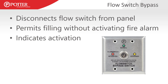There are options to avoid that. Potter offers a flow switch bypass switch that connects in line between the flow switch and the fire alarm panel, simply disconnecting that signal as it's being sent. It permits filling and maintenance without activating the fire alarm, but also gives you an indication through an LED light that it is activated. When the bypass switch is in the bypass position, the fire alarm panel goes into trouble — so it can't be forgotten about. The red LED illuminates to tell you when the paddle is in the flow position, giving you a way to test the switch without activating the fire alarm system during maintenance and filling operations.